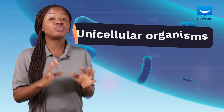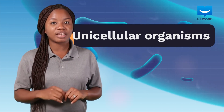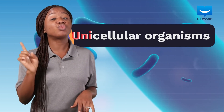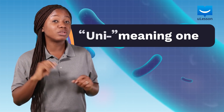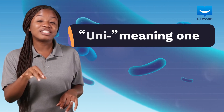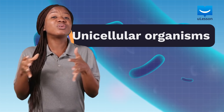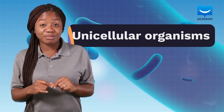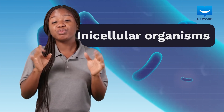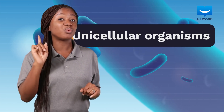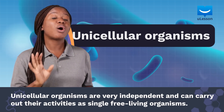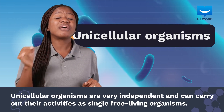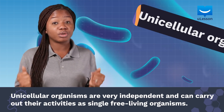Living organisms could be unicellular or multicellular. The word uni basically means one or single. Unicellular organisms are just single cells — they are single-celled organisms and carry out all of life's processes within one cell. Unicellular organisms are very independent and carry out life's activities on their own.